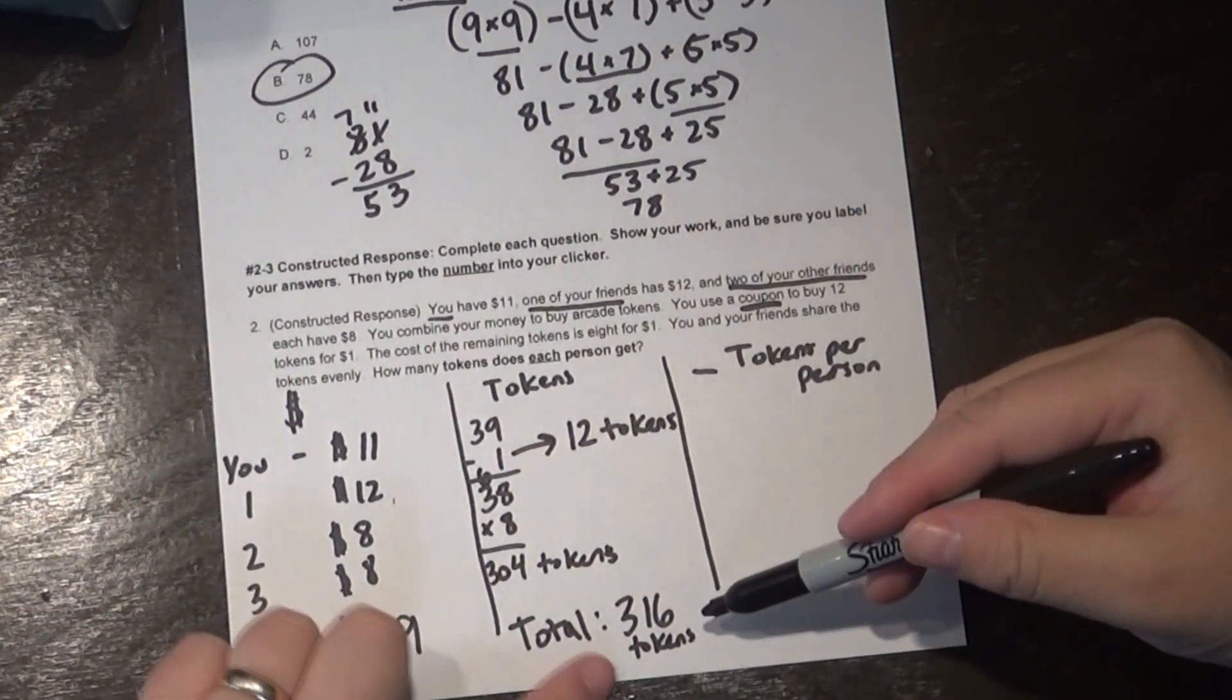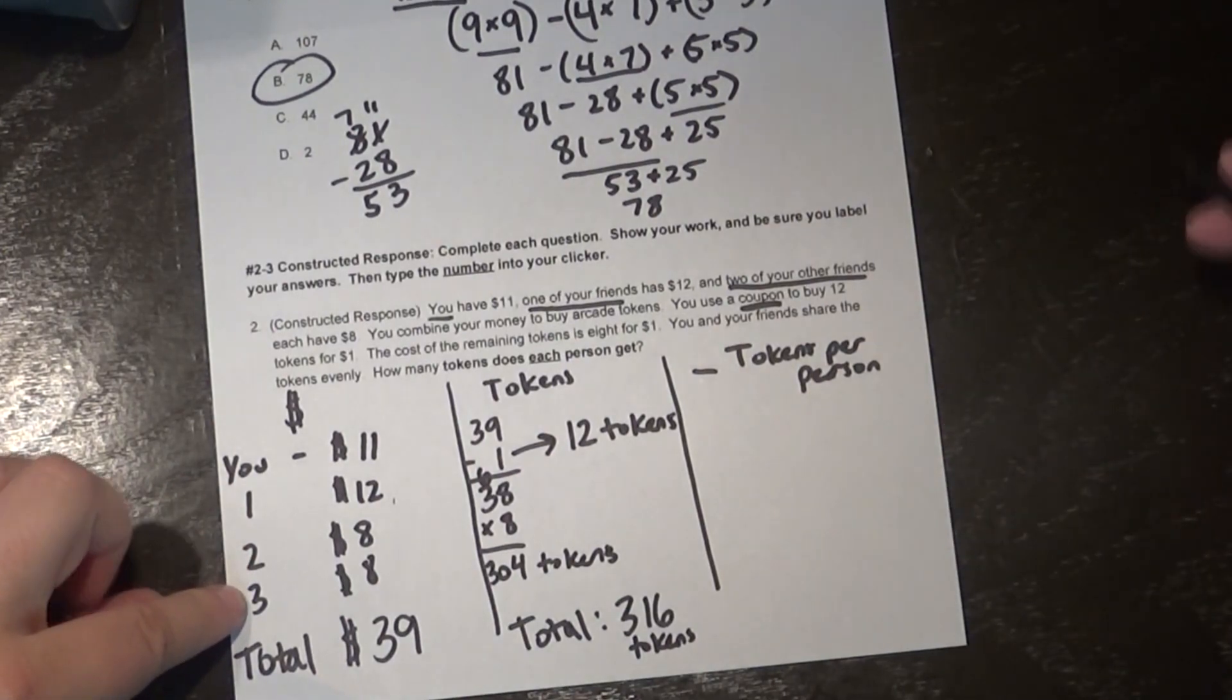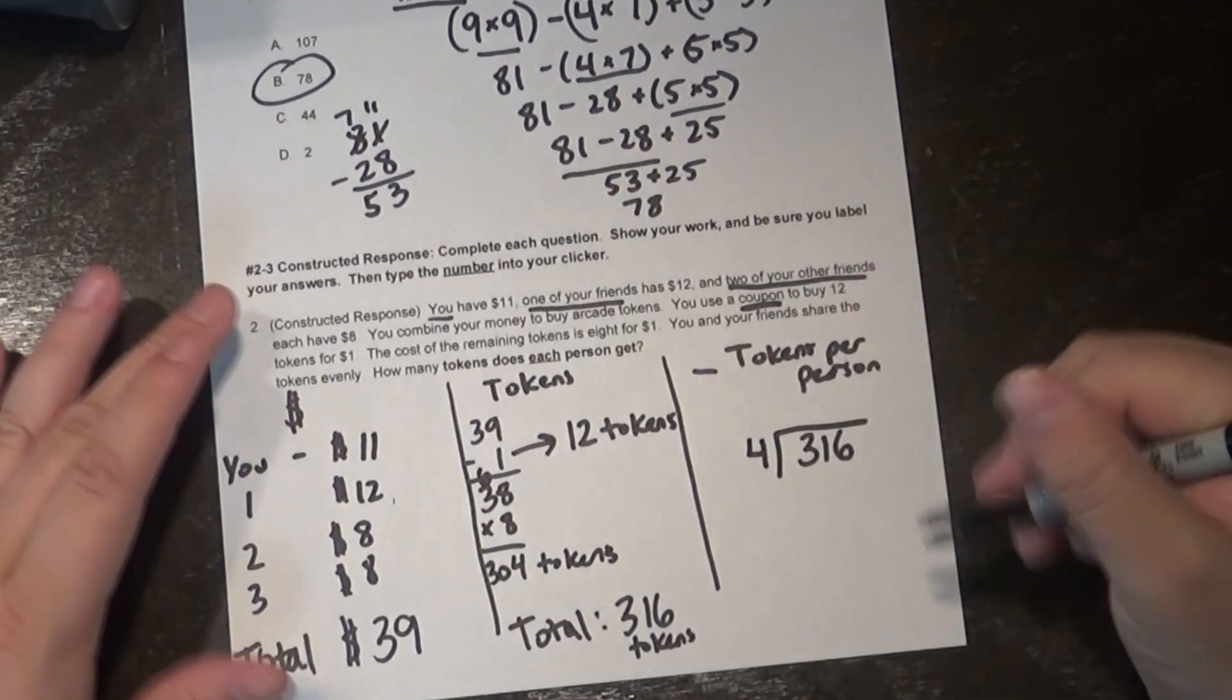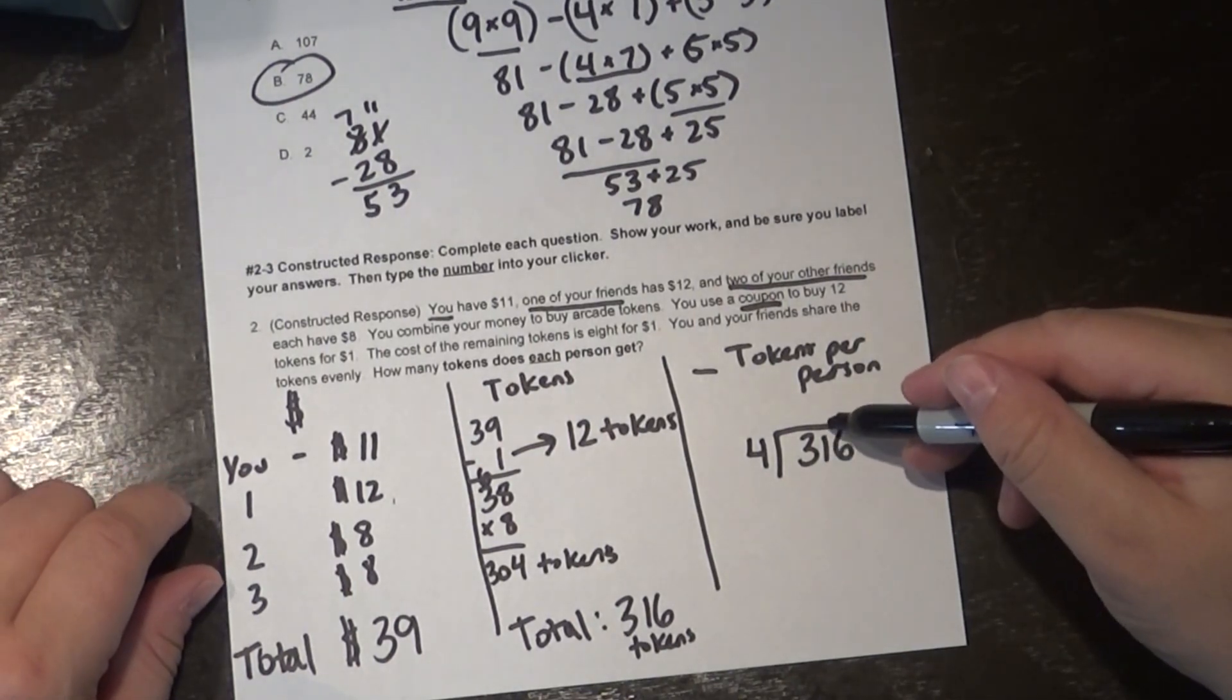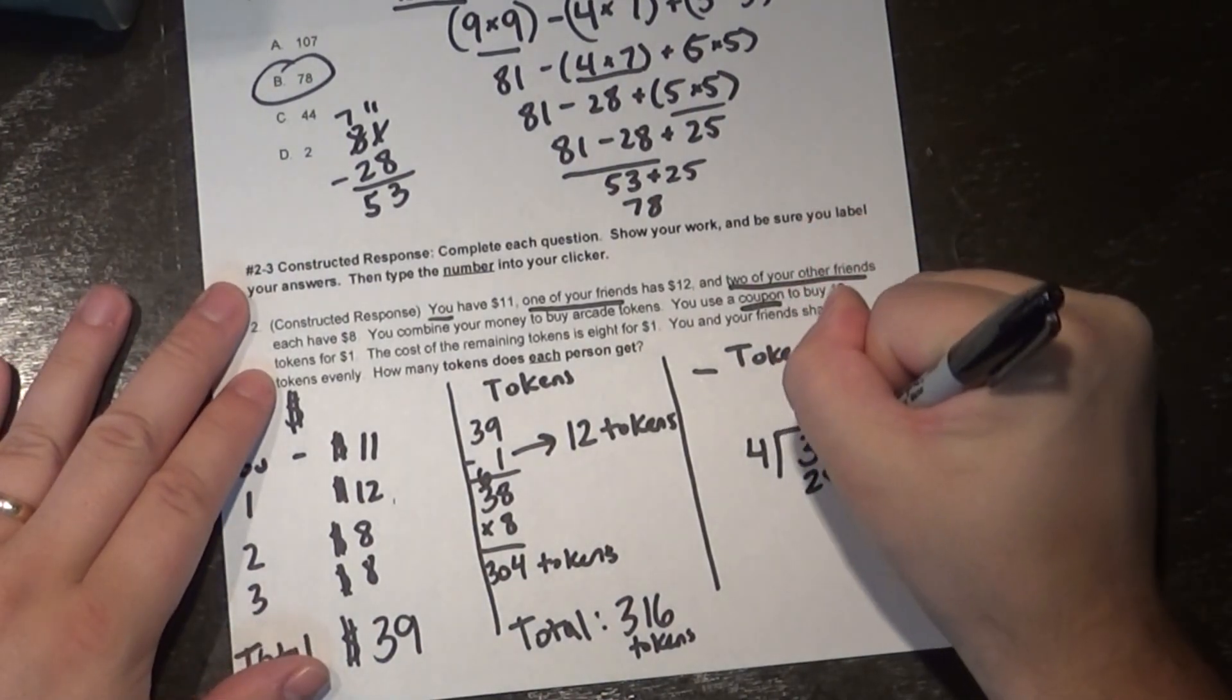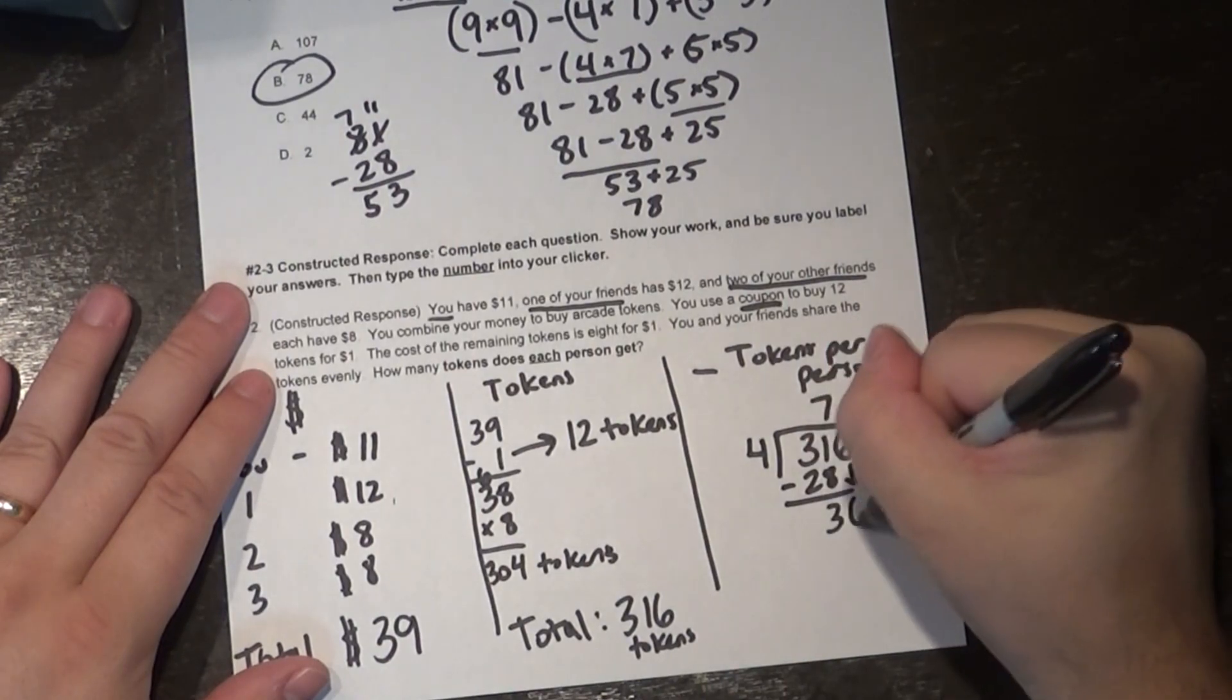Okay so now with 316 tokens and with 1, 2, 3, 4 people to split it amongst I'm going to take 316 and divide by 4. So I think to myself how many times does 4 go into 31? Well the simple answer there is it doesn't. If I did 8 times I'd have 32, I can't do that. I have to do 7, and then 7 times 4 is 28. I'll subtract, that leaves me with 3. I'll bring down my 6.